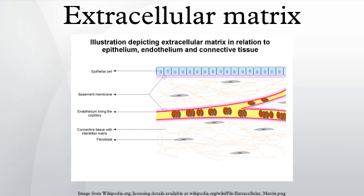It is also a chief component of the interstitial gel. Hyaluronic acid is found on the inner surface of the cell membrane and is translocated out of the cell during biosynthesis. Hyaluronic acid acts as an environmental cue that regulates cell behavior during embryonic development, healing processes, inflammation, and tumor development. It interacts with a specific transmembrane receptor, CD44.